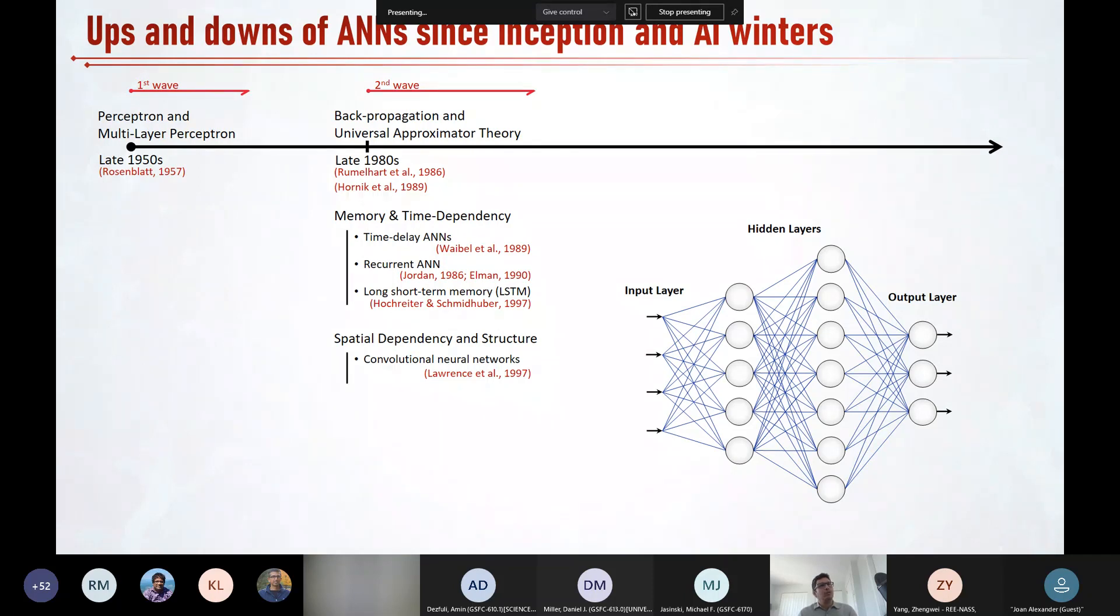And at that point, different approaches were being developed to induce memory and time dependency and also spatial dependency to the neural networks. Different ideas appear to do so, such as tab delay lines, time delay neural networks, recurrent connections, recurrent neural networks, and the idea of information gates and long short term memory or LSTM networks. And of course, convolutional neural networks to account for spatial dependency and structure in data appeared also back then. This is also the point where neural networks started receiving much attention in earth and environmental sciences. The first publications around neural networks in our field started appearing in the early 1990s.